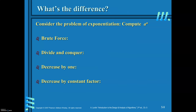You have already learned what brute force is and the divide and conquer technique. Here I have given you an introduction to decrease and conquer — that is decrease by one (decrease by constant), where the problem size is decreased by 1, and decrease by constant factor, where you are decreasing by a factor of 2. When you apply these techniques to find a^n, I want you to find the difference in complexity.